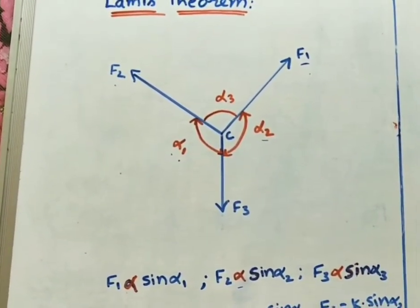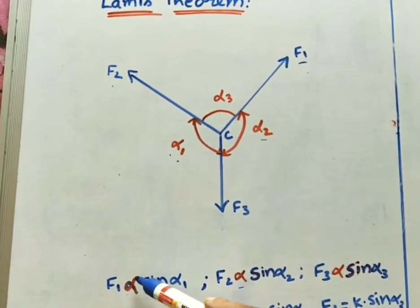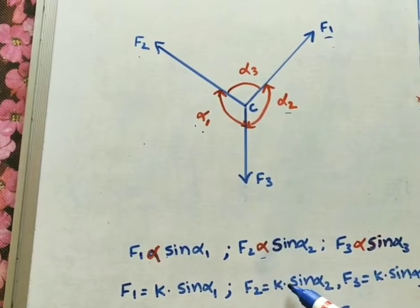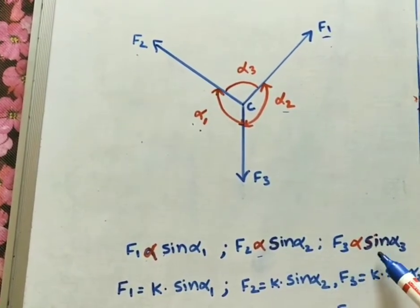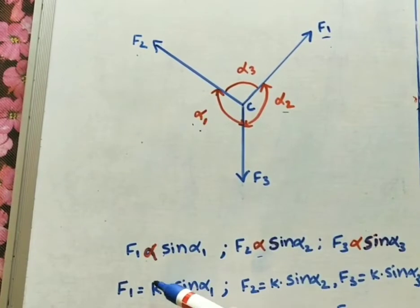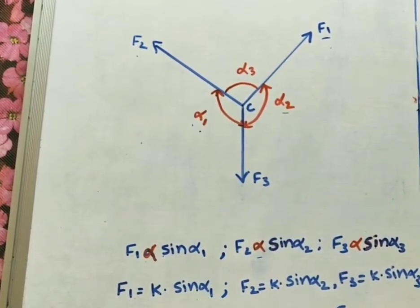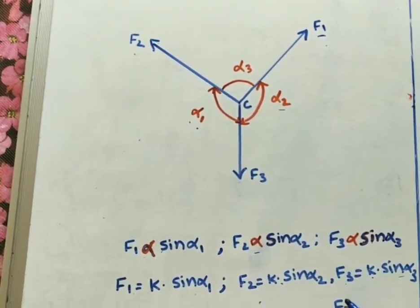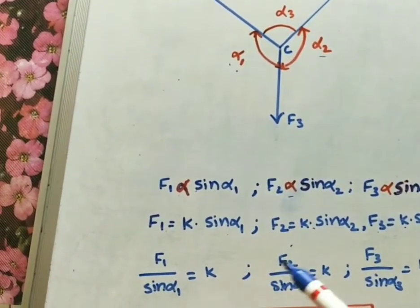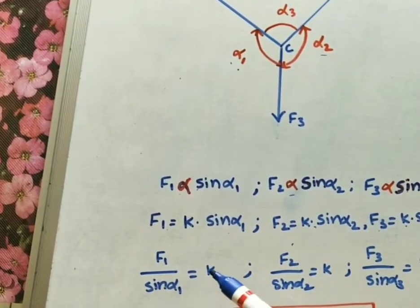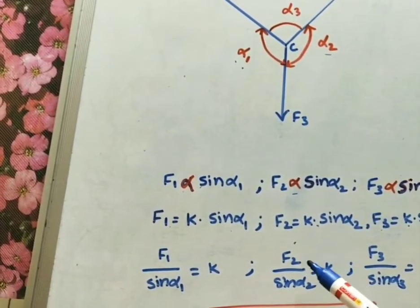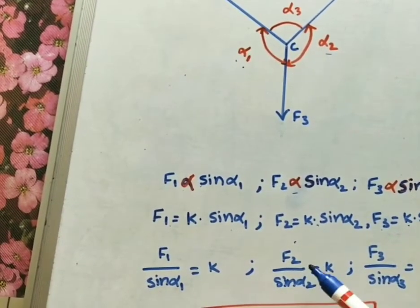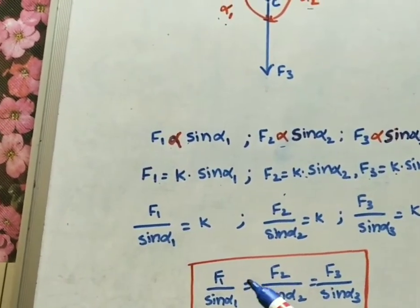To remove the proportionality, we introduce a constant k. So F1 = k·sin(α1), F2 = k·sin(α2), and F3 = k·sin(α3). Rearranging, k = F1/sin(α1) = F2/sin(α2) = F3/sin(α3). Since k is constant in all three equations, we can write this as a single equality.